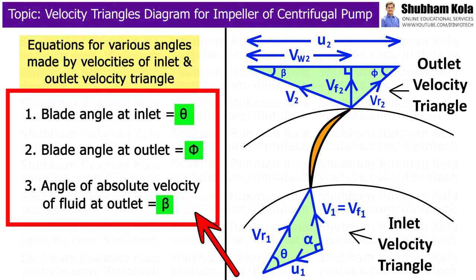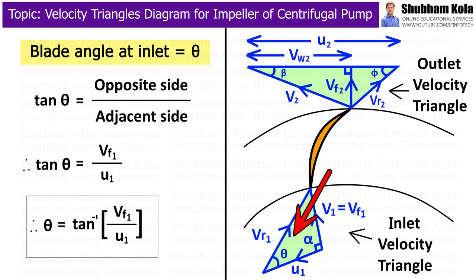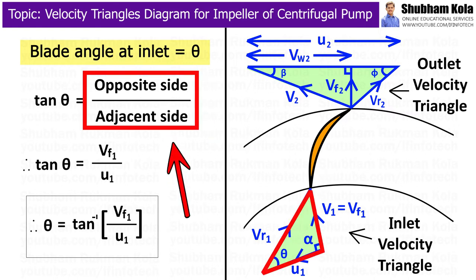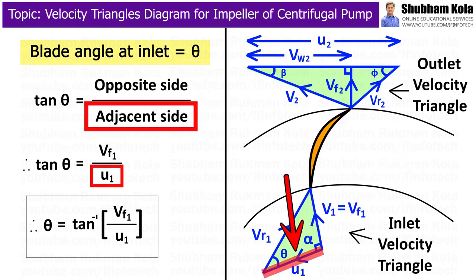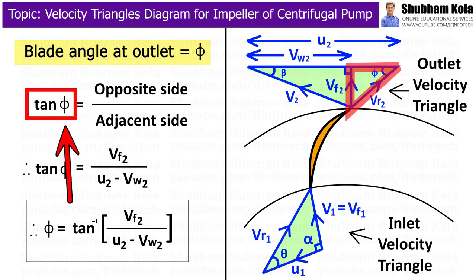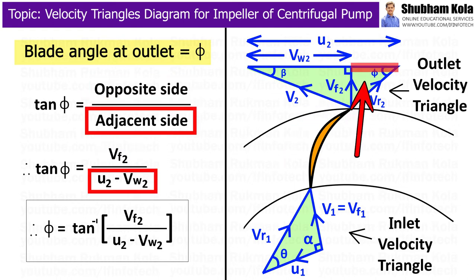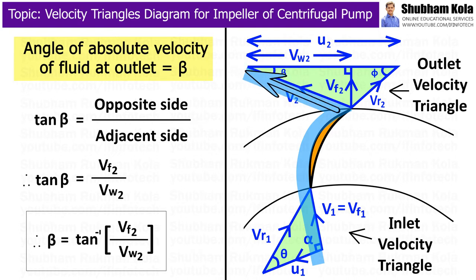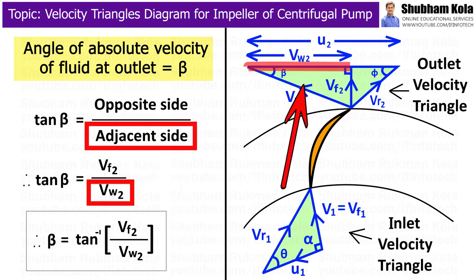We now discuss equations for various angles in the inlet and outlet velocity triangles. To determine the blade angle at inlet, θ: tan θ = Vf1 / U1. To determine the blade angle at outlet, φ: tan φ = Vf2 / (U2 − Vw2). At the outlet, the fluid comes out at angle β with absolute velocity V2 in the direction of blade motion; tan β = Vf2 / Vw2.